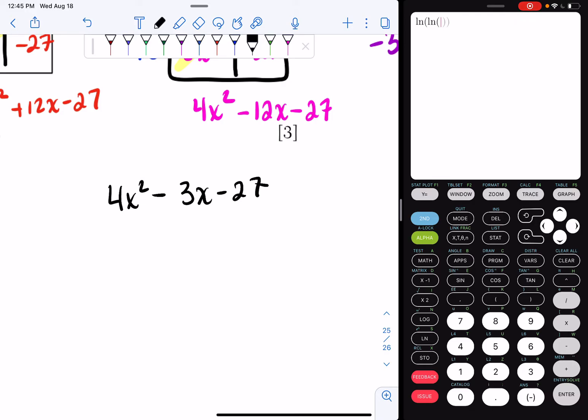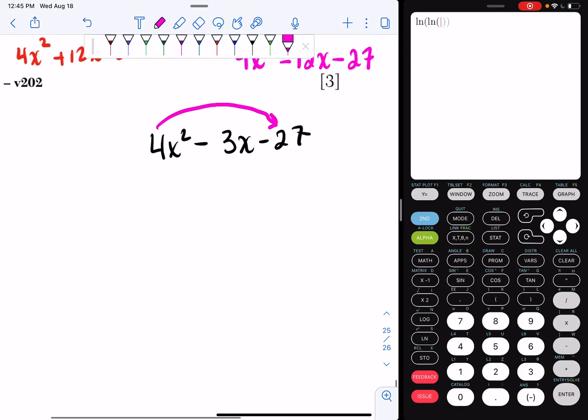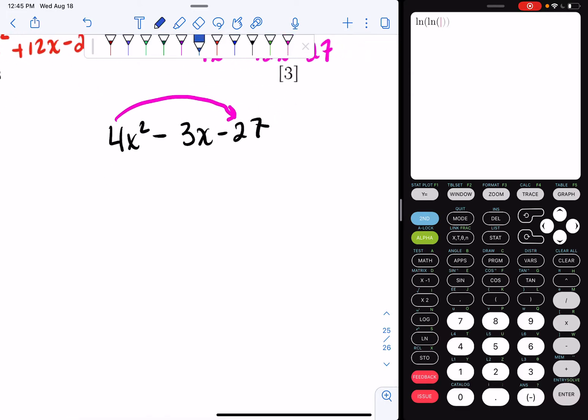So if I have 4x squared minus 3x minus 27, I could factor that. There is no GCF, so I can do a slide and divide. So 4 times negative 27 is negative 108. So what I really want to factor is x squared minus 3x minus 108. And I'm going to put the 4 over here as a reminder.